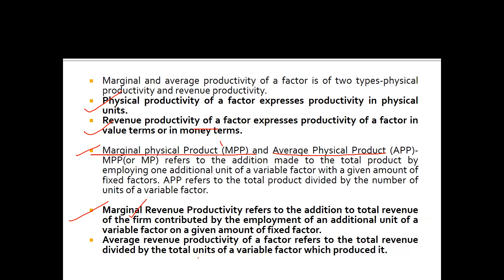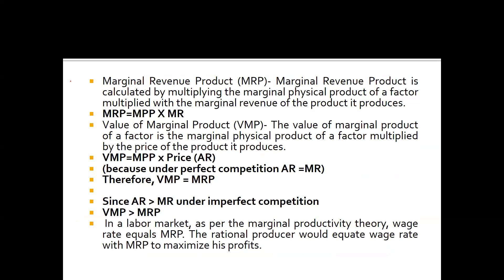MRP stands for Marginal Revenue Product. MRP is calculated by multiplying the marginal physical product of a factor by the marginal revenue of the product it produces: MRP = MPP × MR. The value of marginal product (VMP) is the marginal physical product of a factor multiplied by the price of the product: VMP = MPP × Price. Under perfect competition, AR equals MR, therefore VMP equals MRP.